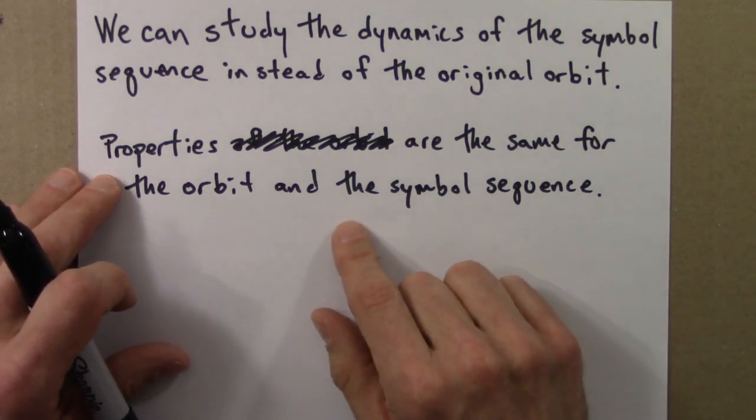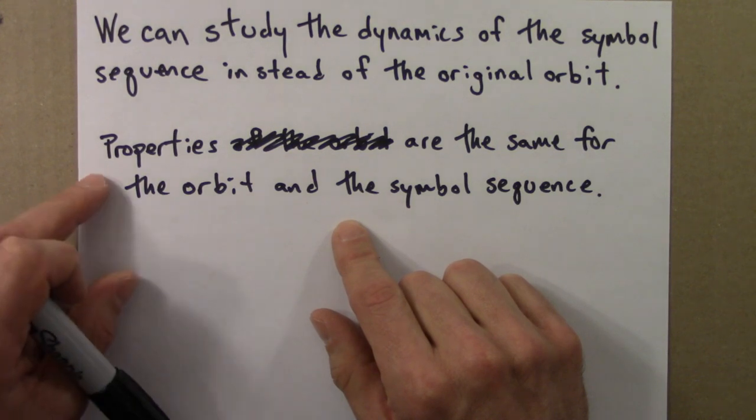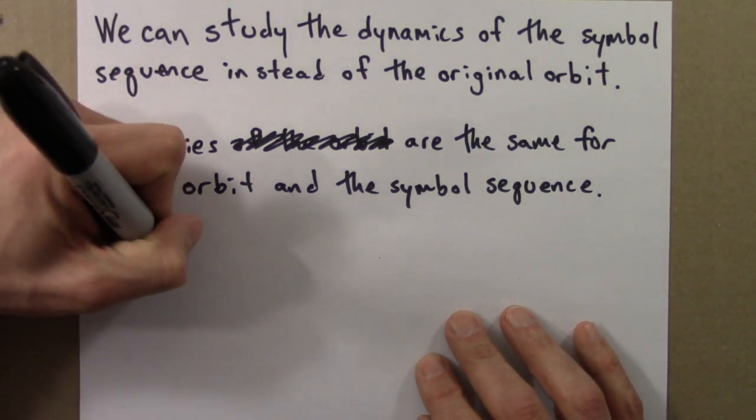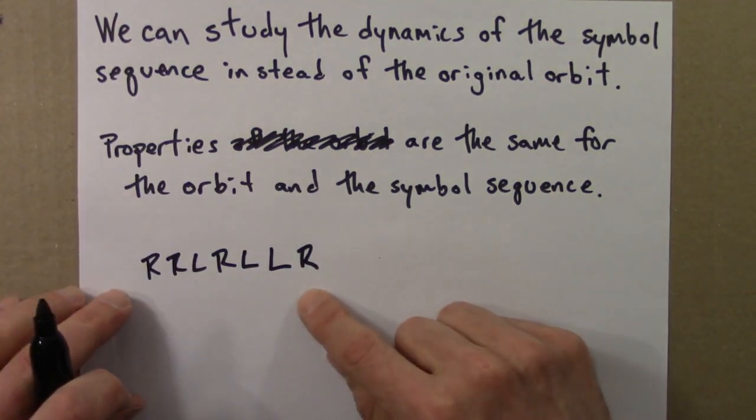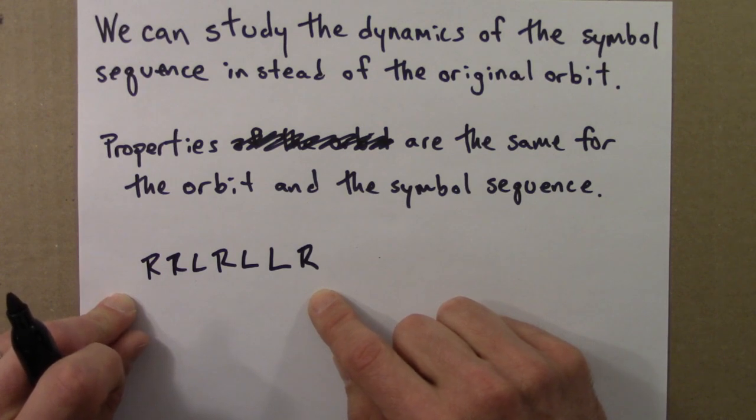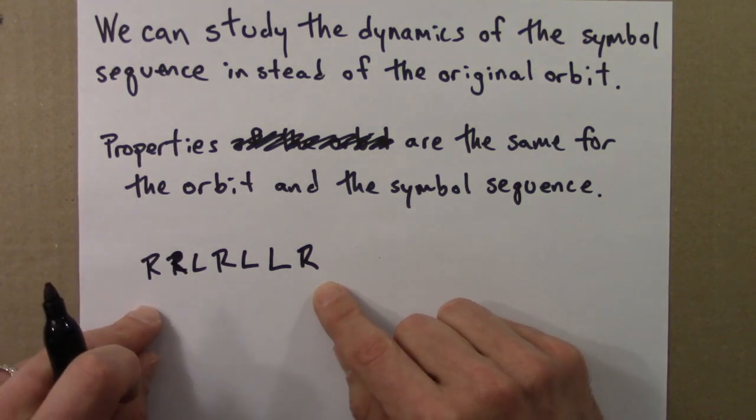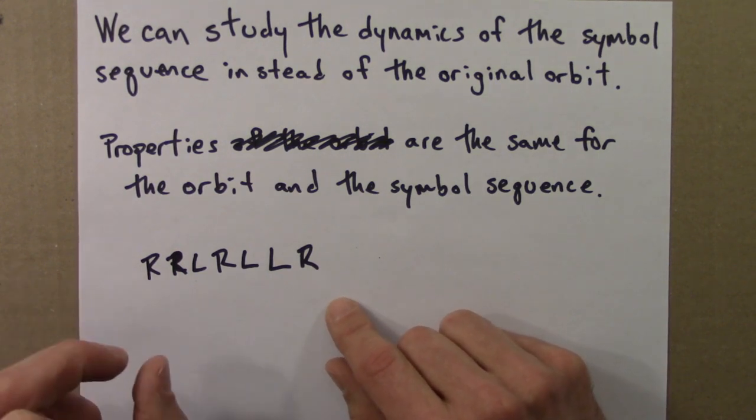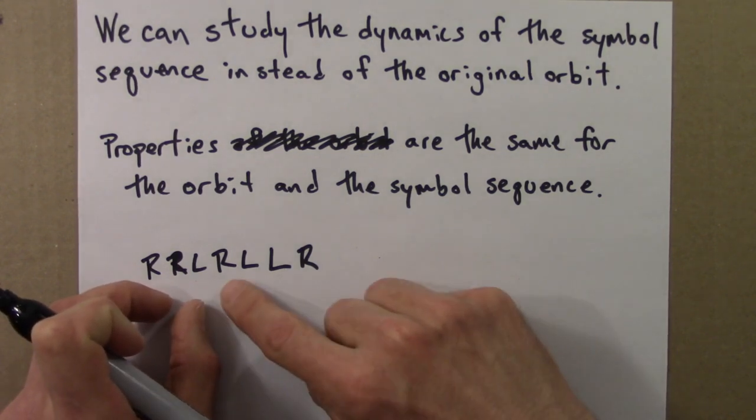Well, it turns out that for this particular way of forming symbols, one can show and argue the following. Suppose I showed you a symbol sequence: R, R, L, R, L, L, R. Then I might ask you, what initial conditions could have given rise to this particular symbol sequence? And one can show, you can kind of infer backwards, that that would correspond to a pretty narrow region of initial conditions. And moreover, that would just be a single connected region that would give rise to this.